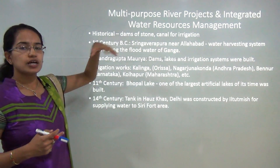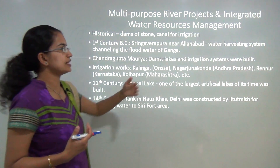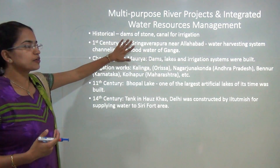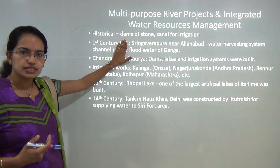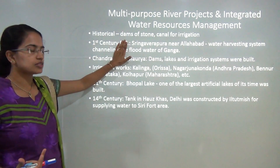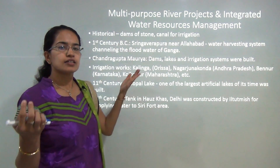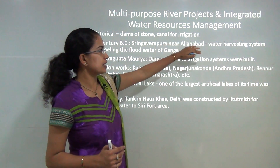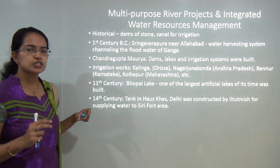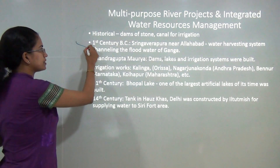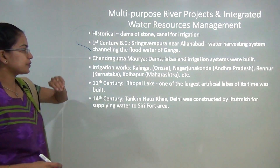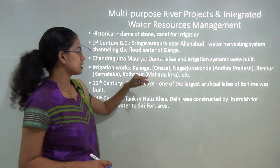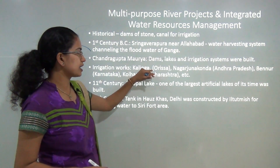Let's first understand the historical idea of how water management practices were done in India. Prior to the first century BC, the Harappa and Mohenjo-daro civilizations had water tanks and water storage systems. In the first century BC, Sringavarapuram near Allahabad was known for its unique water harvesting system, where water was harvested from the Ganga river. During the time of Chandragupta Maurya, numerous dams, lakes, and irrigation systems were built. Pioneer examples of ancient and medieval irrigation include Kalinga in Odisha and Nagarjuna Konda in Andhra Pradesh.